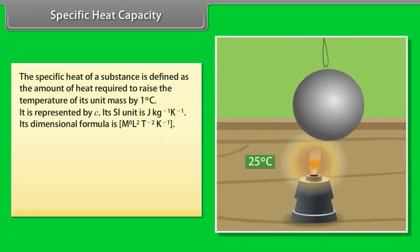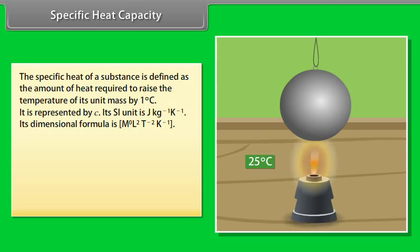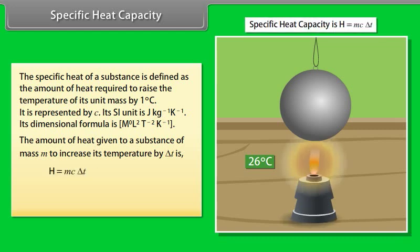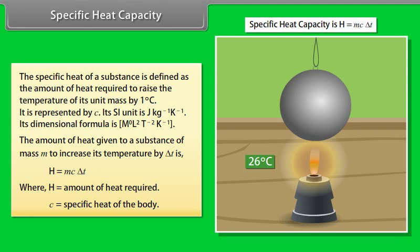The specific heat of a substance is defined as the amount of heat required to raise the temperature of its unit mass by 1 degree Celsius. It is represented by C. Its SI unit is Joule per kilogram per Kelvin. Its dimensional formula is M⁰L²T⁻²K⁻¹. The amount of heat given to a substance of mass M to increase its temperature by delta T is H = MC·ΔT, where H is the amount of heat required and C is the specific heat of the body.